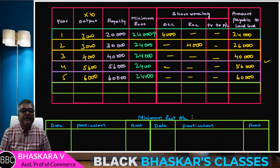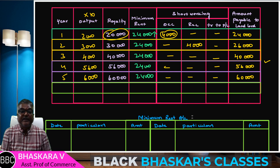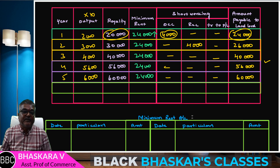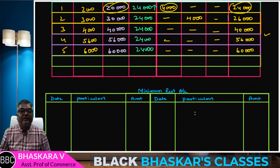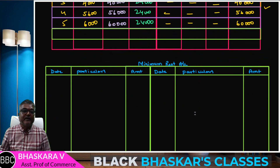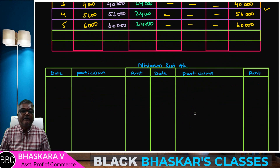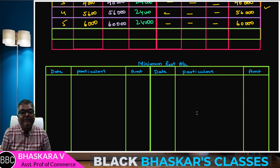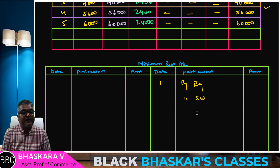Good. The minimum rent account is 20,000; 60,000; 60,000; 60,000. The first year is the minimum rent account. Buy royalty by short working to landlord account.